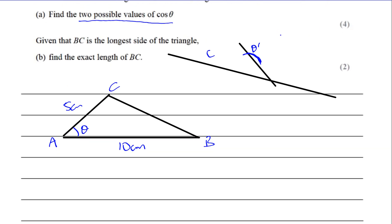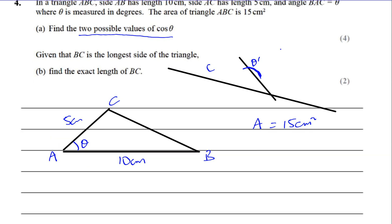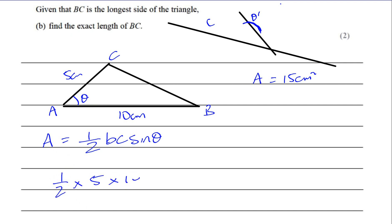Let's first deal with the straightforward case. We know the area is 15 centimetres squared and we know the two sides that make the angle. The area formula gives us: area = ½ × BC × sine theta, i.e., half times the two sides times the sine of the included angle. So here we have ½ × 5 × 10 × sin θ = 15 centimetres squared.